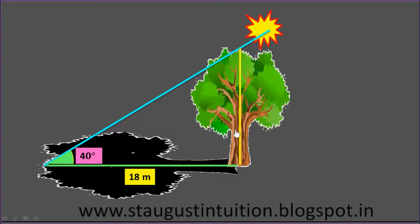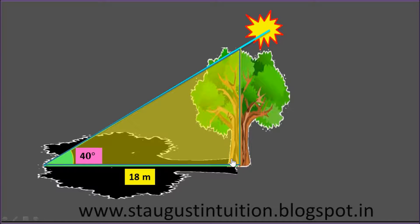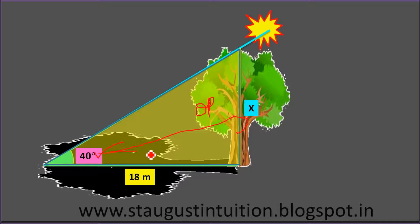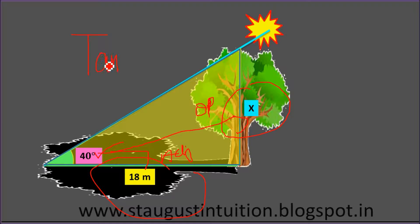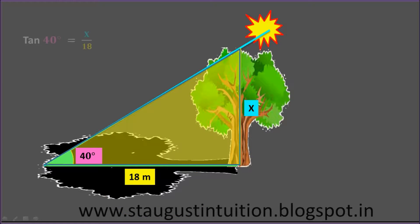The angle is 40 degrees. We label the height of the tree as X. We will identify the opposite side and the adjacent side. We have a problem with tan. Tan 40 is equal to X, the opposite side, divided by 80, the adjacent side. So, tan 40 into 80 is equal to X.